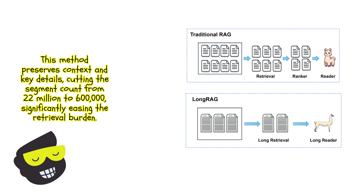Notably, the larger units massively reduce the total number of segments. For instance, if we go from 100-word chunks to 3,000-word chunks, it could reduce the number of segments from 22 million down to 600,000 — and that was their baseline comparison. So with traditional RAG, you have many chunks, retrieval, optional reranking, and a reader. With Long RAG, you just have a long retrieval and then let the LLM take care of it.